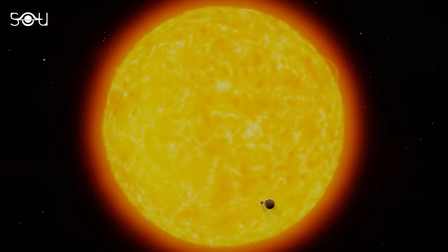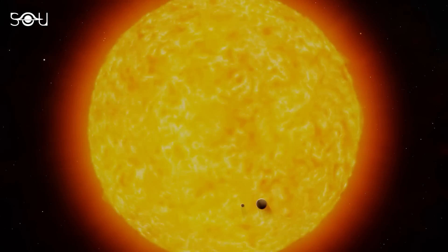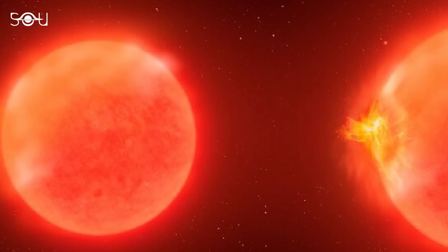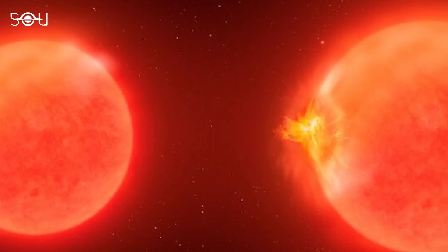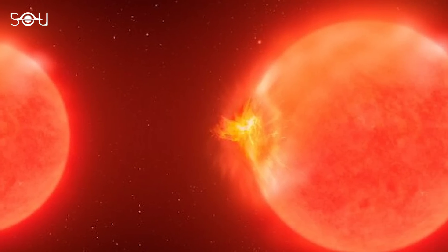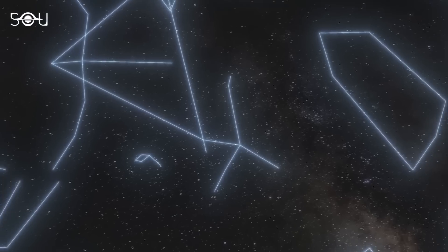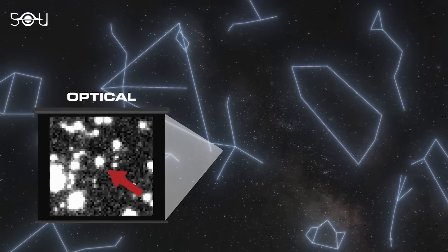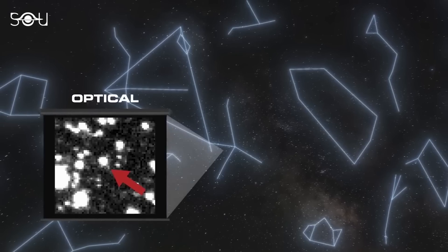In a groundbreaking discovery, astronomers have directly observed a planet being swallowed by its own star. This is the first time such an event has been recorded in astronomical history. The star lies around 12,000 light-years away in the constellation Aquila, and the planet it ate was Jupiter-like.